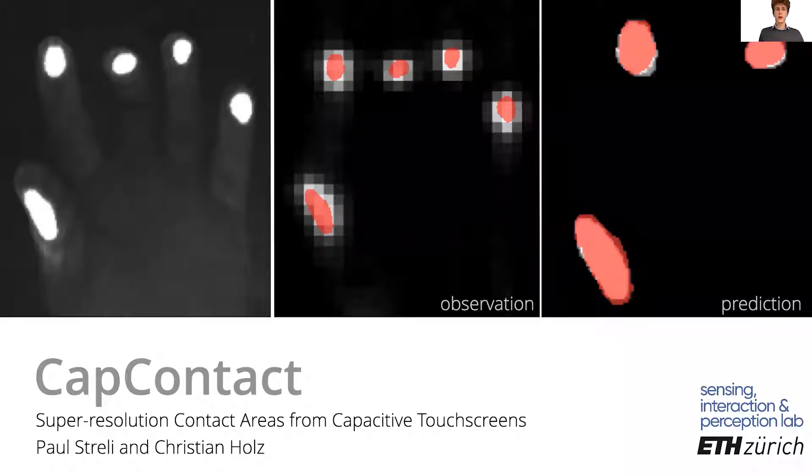We introduce CapContact, a novel method to precisely infer the contact area between the user's finger and the surface from a single capacitive image.